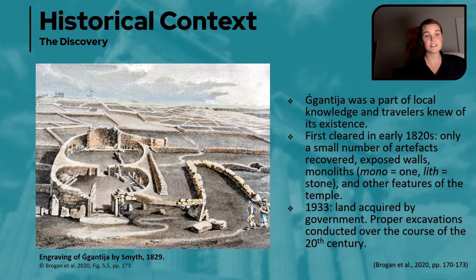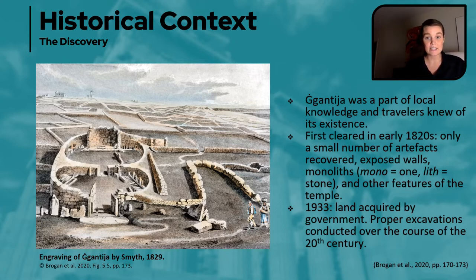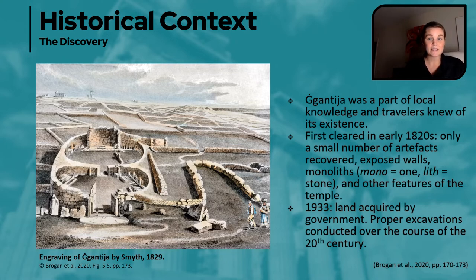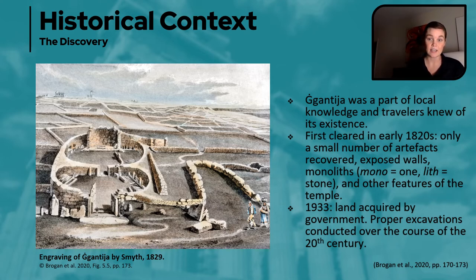In terms of the site's discovery, locals and travelers knew about Ġgantija prior to its formal discovery in the 1820s. However, in 1820, at his own expense, Colonel John Otto Bayer had the site cleared. I use 'cleared' — as most scholarly papers will as well — and not 'excavated,' because the site was not properly excavated until the 20th century. At this point the site was simply cleared of soil and debris, most of which has since been lost to time. Hence the only evidence we have at the site is the architecture and evidence from proper excavations conducted since, along with some drawings and artistic renderings which provide some insight, but proper recording really is the gold standard and that wasn't common practice at this point in time.